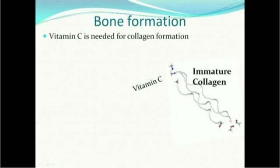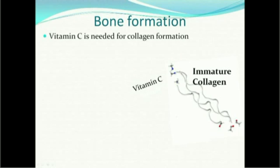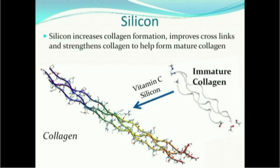In order to understand how these nutrients work together, let's talk about bone formation. Vitamin C is needed for collagen formation — that's a given. If you don't have vitamin C, you get scurvy and your ligaments fall apart and your teeth fall out. Silicon increases collagen formation, improves the crosslinks of collagen, and it strengthens the collagen to help form mature collagen.